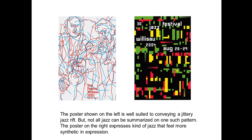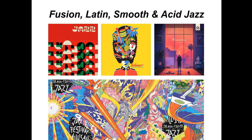The poster on the left is well-suited for conveying a jittery jazz riff, but not all jazz can be summarized in one such pattern. The poster on the right expresses a kind of jazz that feels more synthetic in expression — something perhaps a little more electronic. Here are some other types of jazz in album covers and posters. For those unfamiliar with jazz, there's fusion, Latin, smooth, and acid jazz — you can look through and decide which type of rhythm would be associated with each type of jazz.